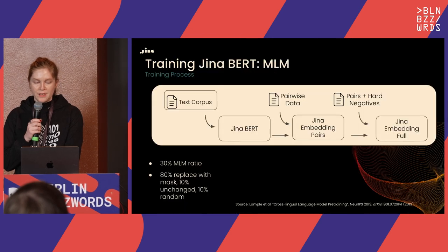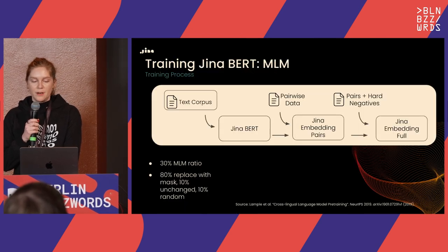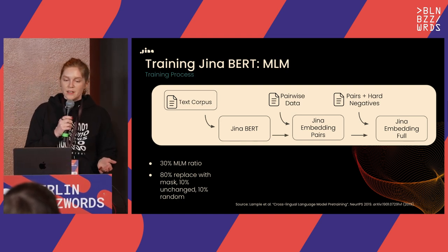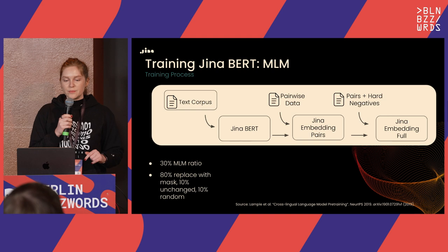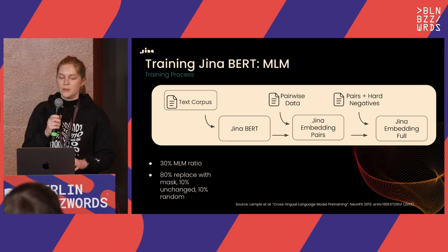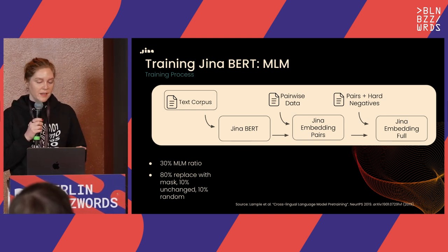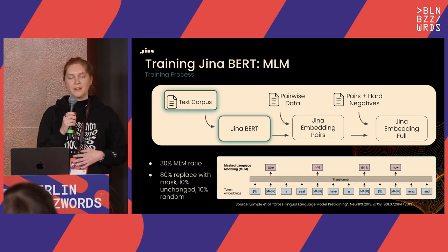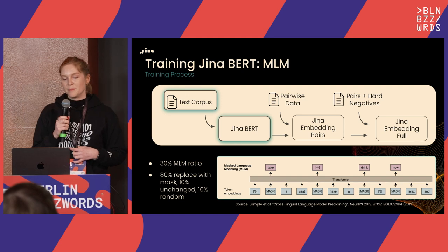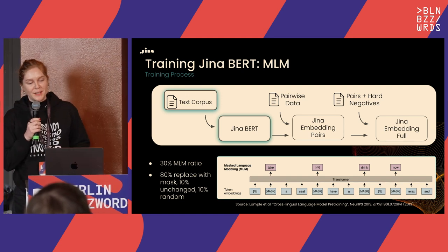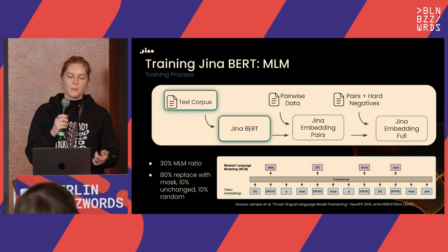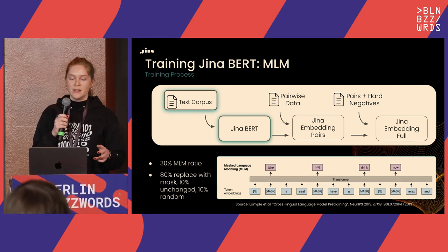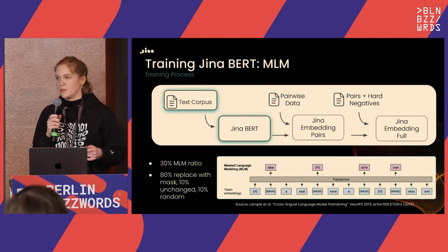The training process for our embedding models starts with training GinaBERT, a BERT-based model. We take a huge collection of text corpora from the web and use a masked language modeling strategy: we mask 30% of the tokens in the input, replacing 80% of those with a mask token, 10% stay unchanged, and 10% are replaced with a random token.